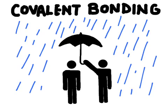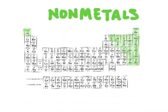A covalent bond forms when elements share their electrons. This is different from ionic bonding because in an ionic bond, one element — the metal — is actually going to give its electron over to the non-metal. Covalent bonds form when non-metals bond with each other, whereas in ionic bonding we have a metal on one side of the periodic table combining with a non-metal.